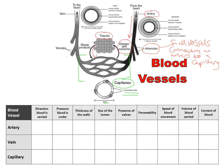Then that blood, now classed as deoxygenated — without oxygen — has to return to the heart to be pumped up to the lungs to pick up more oxygen, and that happens in the veins. So if we follow this diagram round, we've had the artery from the heart delivering blood to the capillary where we get gas exchange — waste products like CO2 moving out and oxygen moving into the tissues. Then this blood will travel up the vein, back to the heart. Veins go back to the heart. But we can see there's another word before we reach the vein — the venule.